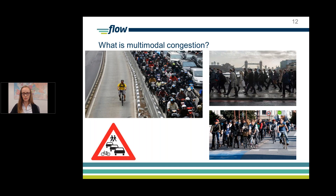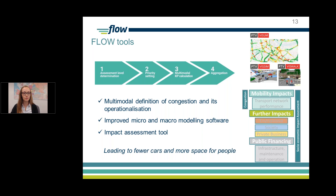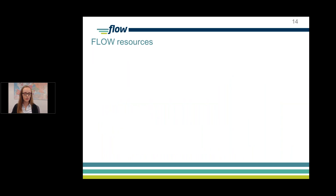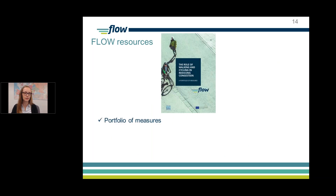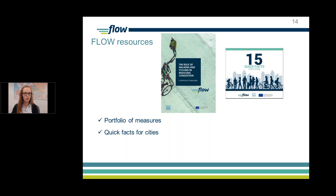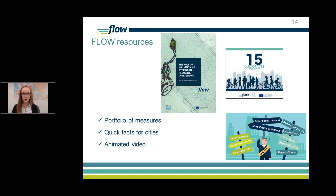To address the technical component, FLOW has developed a portfolio of tools which can assess walking and cycling measures for their impacts on congestion, as well as their wider societal, environmental, and economic impacts. We've been working with transport planners, decision makers, and consultancies across Europe to fine-tune these tools and ensure their usability in everyday work. This requires a transition process and some political convincing. To address the political component, FLOW has produced resources including a portfolio of measures where cycling and walking successfully reduced congestion, 15 quick facts for cities, and an animated video summing up the technical and political aspects.